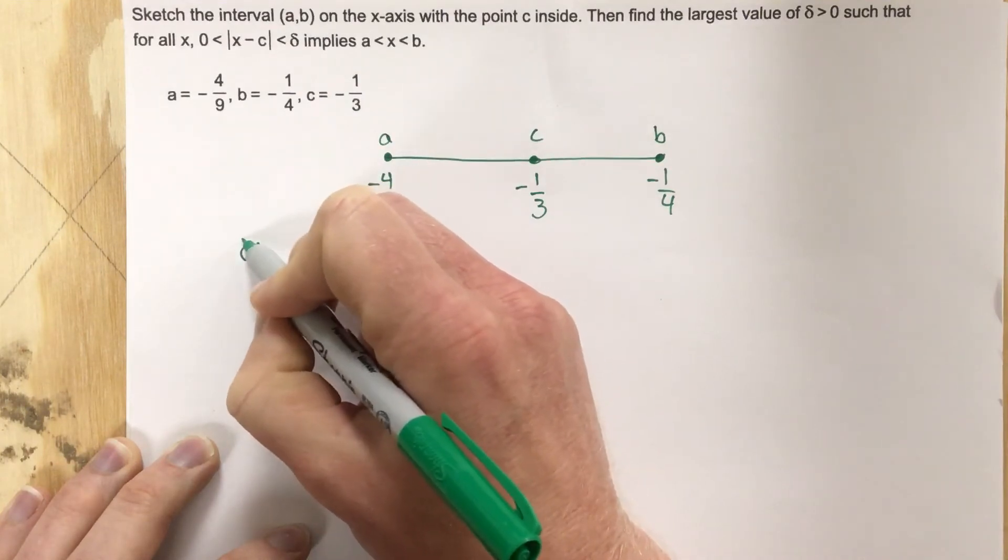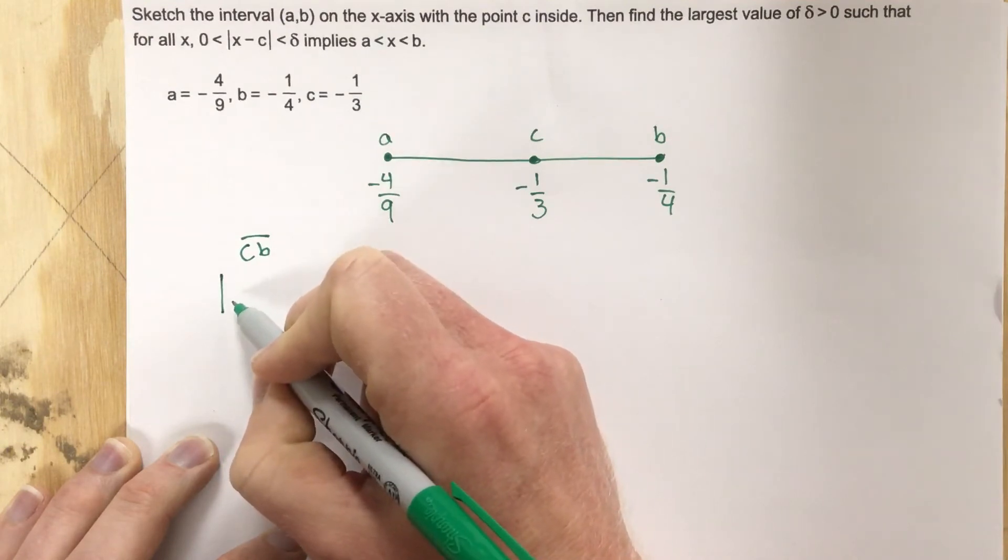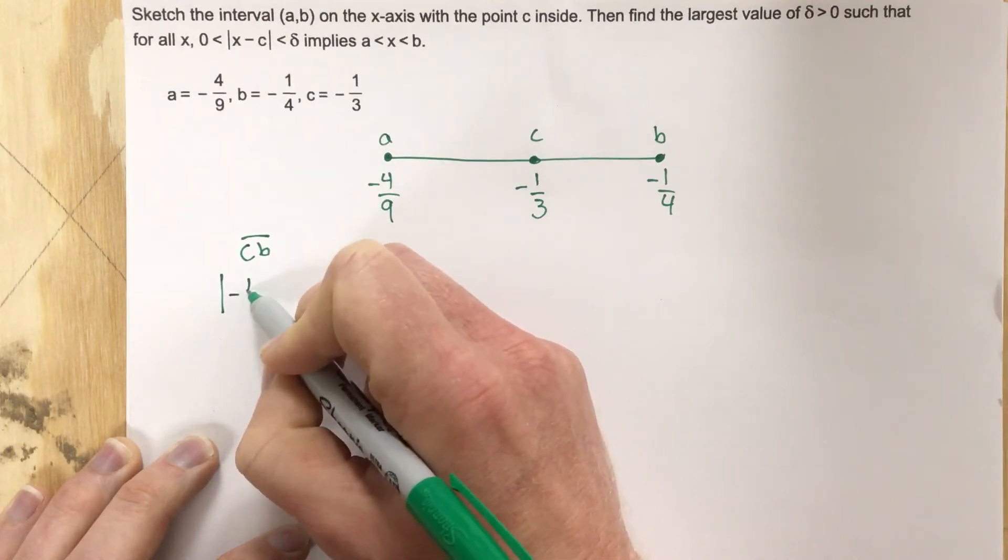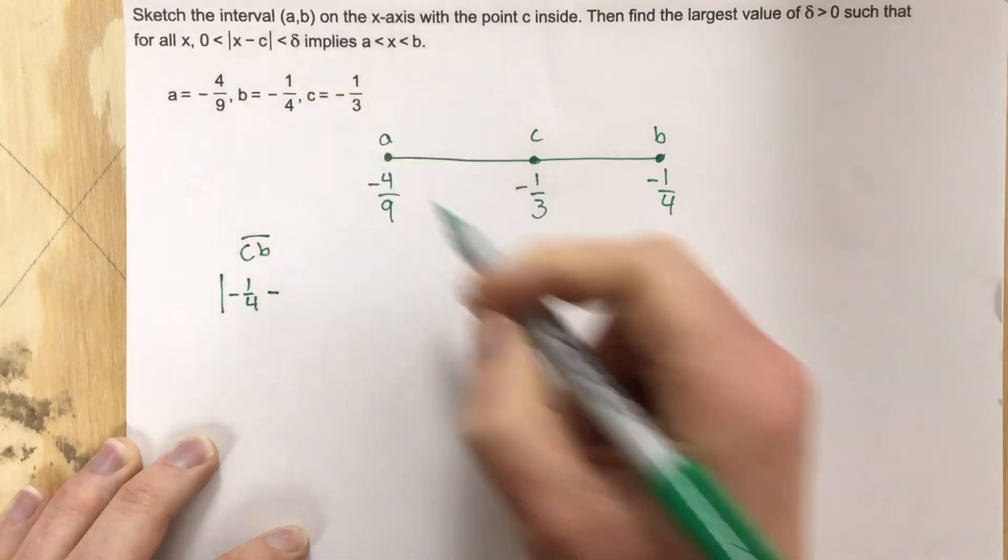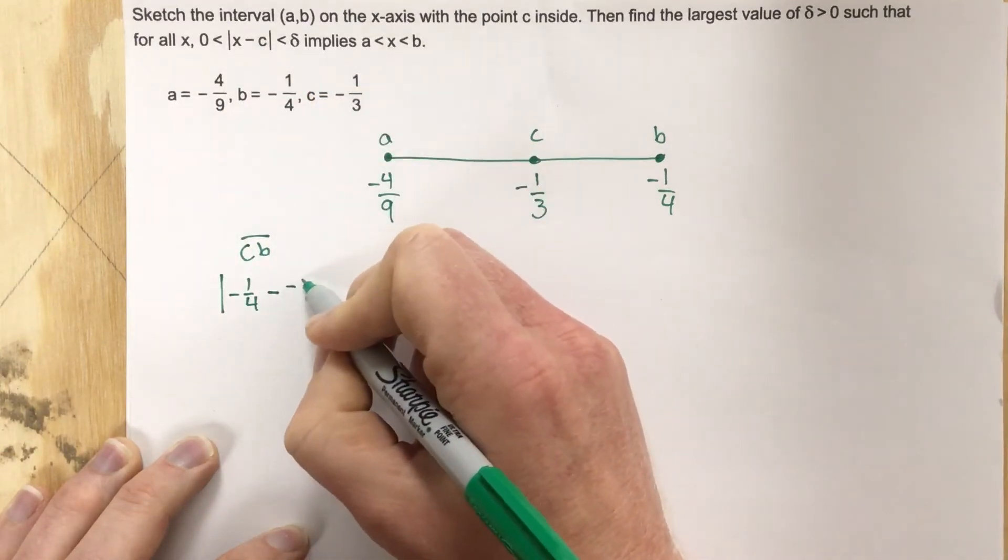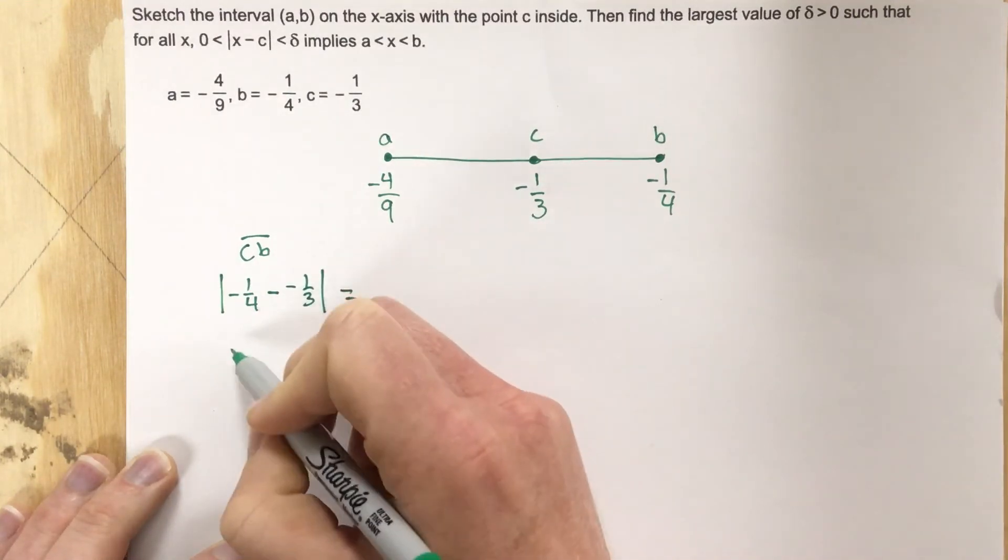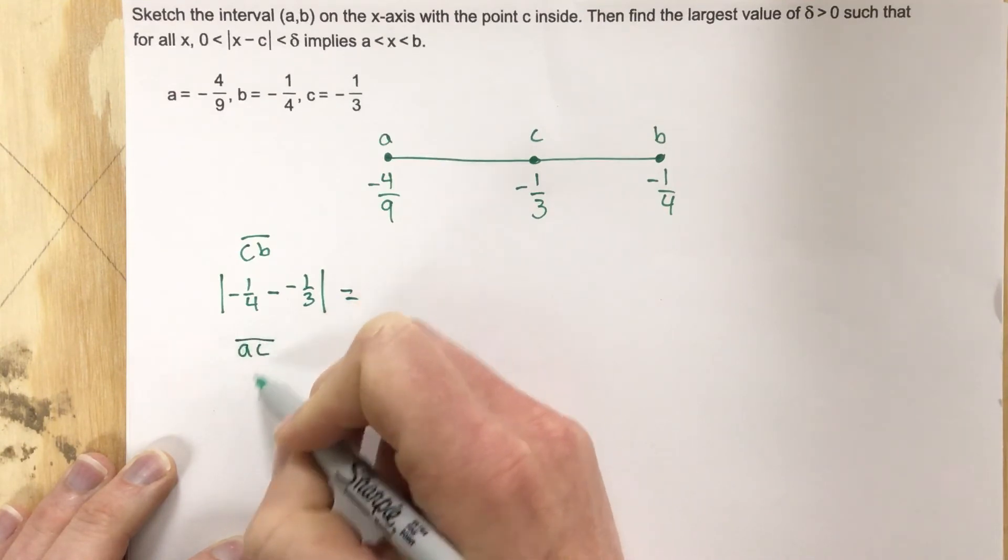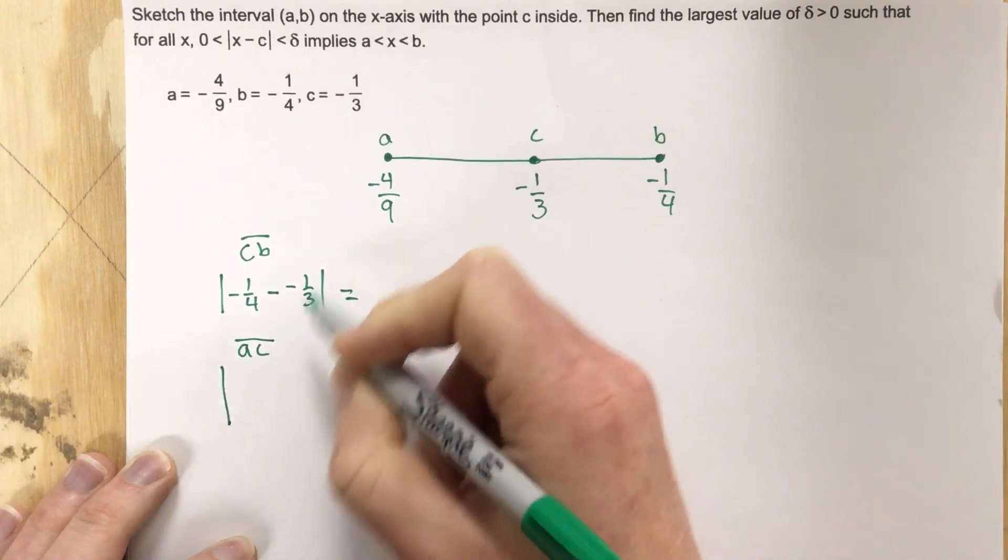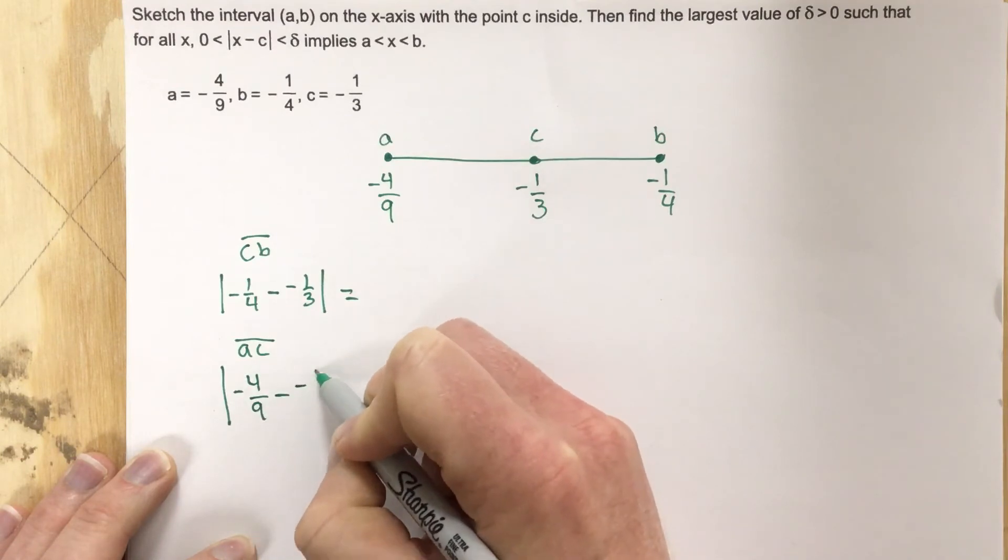We're going to do the absolute value of negative one fourth minus, and I'm just using this right here, minus c which is negative one third. And then I'm also going to do from a to c, so I'm going to just go ahead and say line segment a to c, and we're going to say that that's negative four ninths minus negative one third.